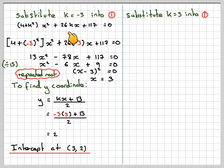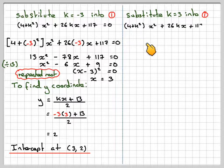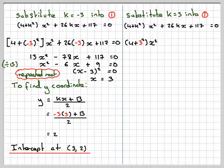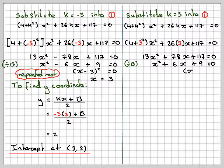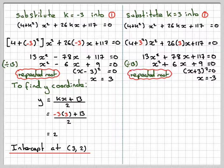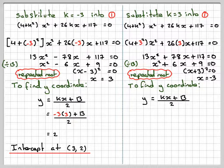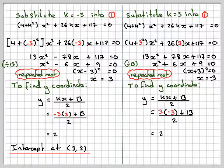Now substituting k equals 3 into equation 1: (4 plus 9)x squared plus 26 times 3 times x plus 117 equals 0, giving 13x squared plus 78x plus 117 equals 0. Dividing by 13 gives x squared plus 6x plus 9 equals 0, which factorises as (x plus 3) squared equals 0, giving the repeated root x equals minus 3. To find the y-coordinate: y equals (3 times minus 3 plus 13) over 2, which also gives 2. So for k equals 3, the line and circle meet at (minus 3, 2).